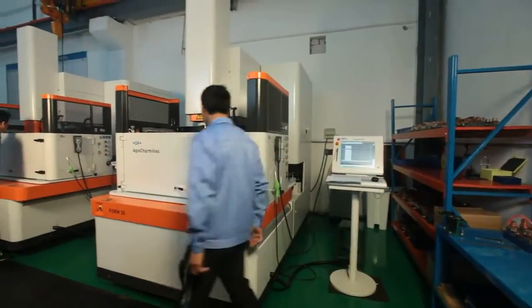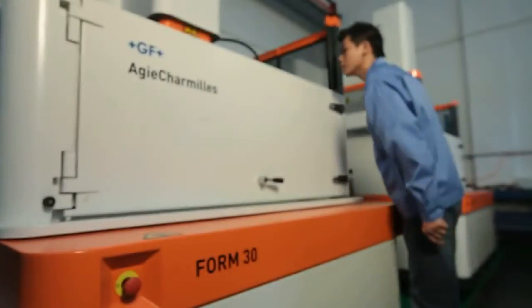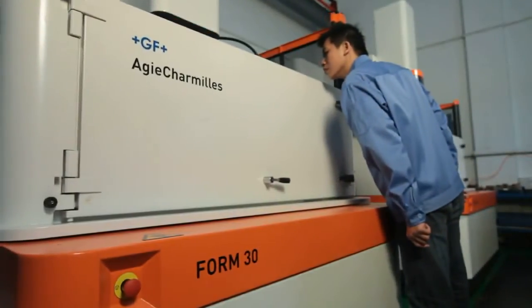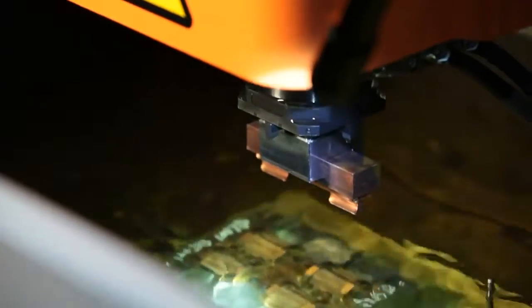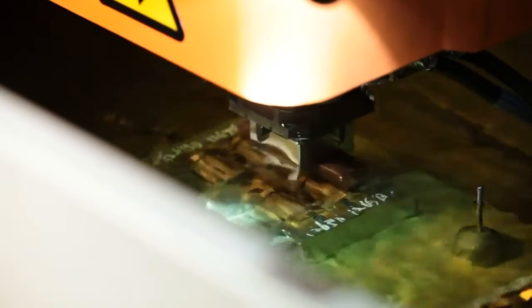Eight EDM machines, including mirror EDM, have a max machining size of 1000 by 700 millimeters, which can control tolerance to 0.02 millimeters.